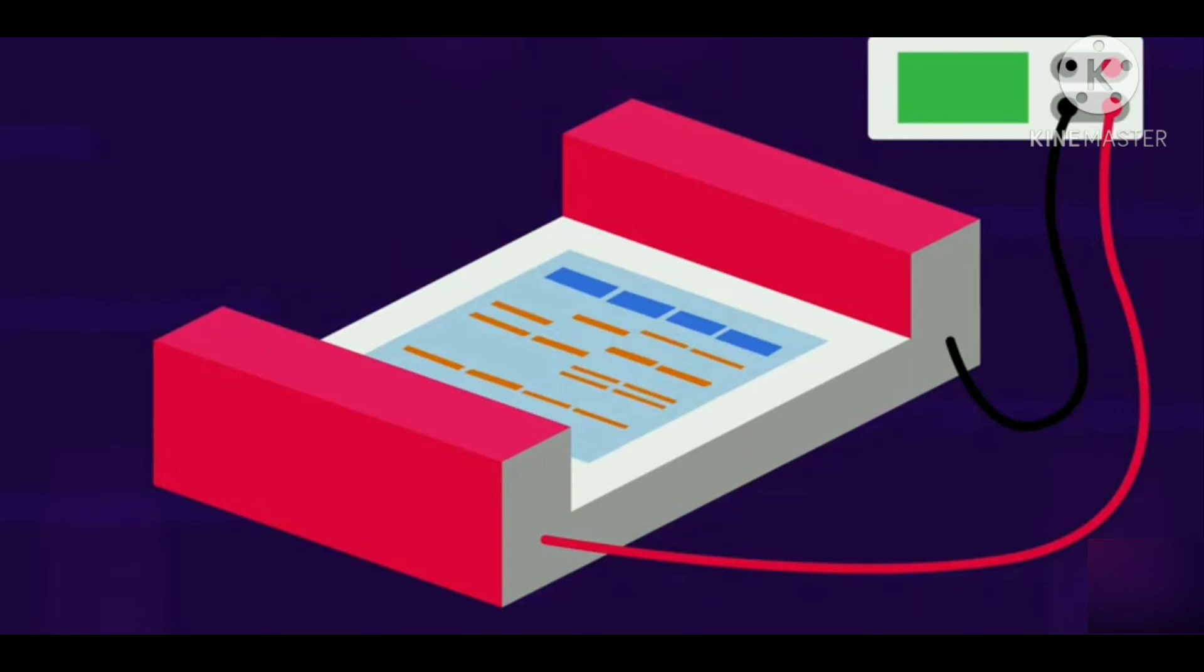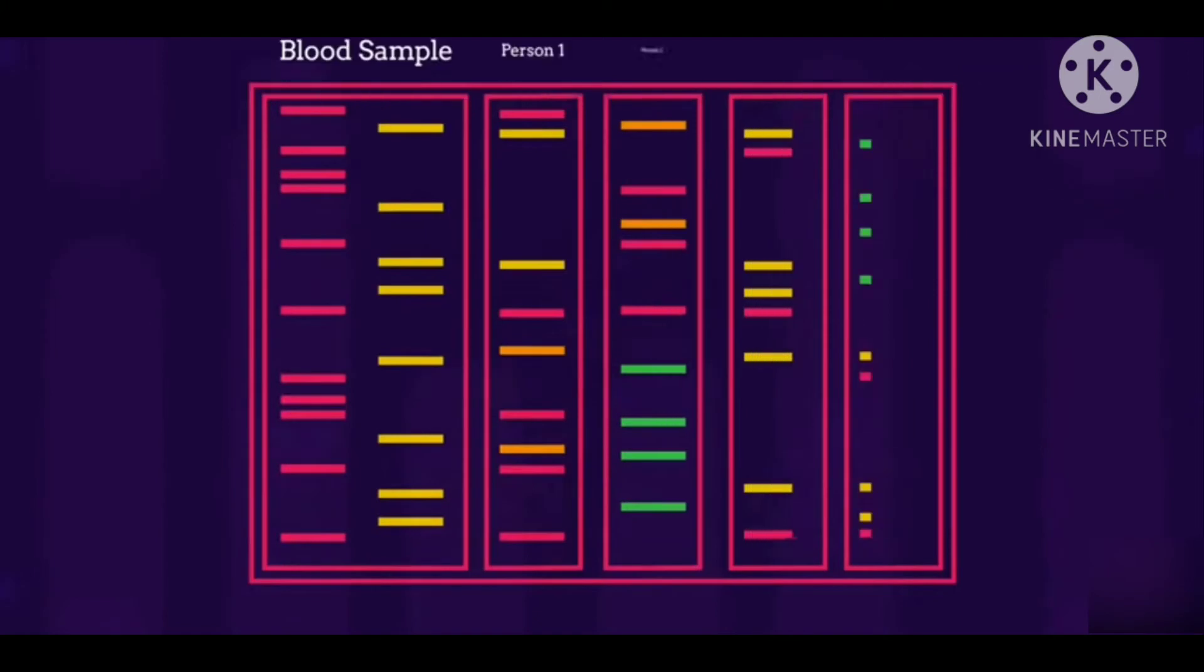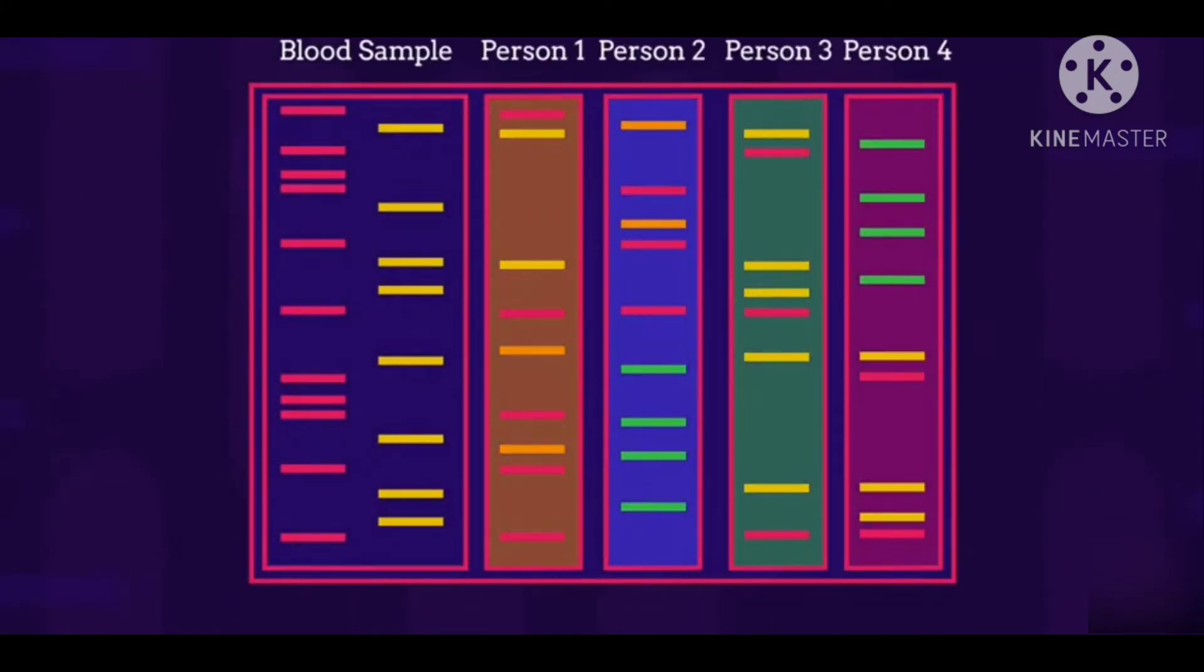The pattern is then transferred to a nylon sheet in southern blotting. And finally, the lines produced by the DNA samples from different people are compared.